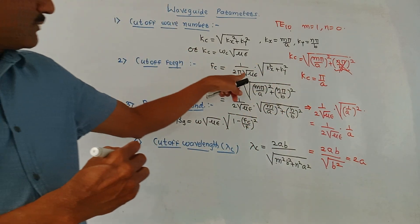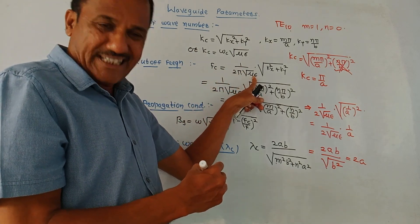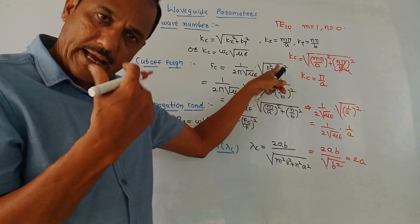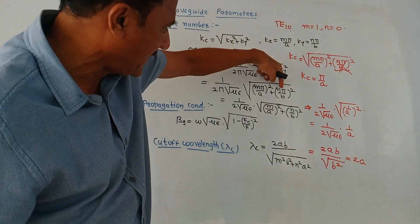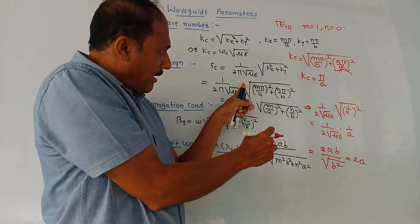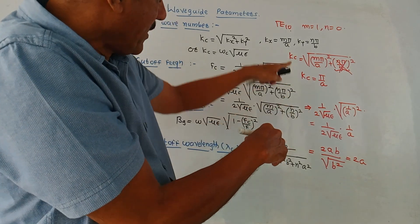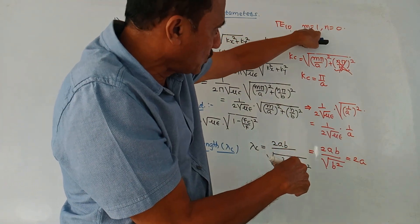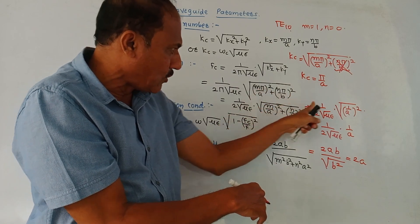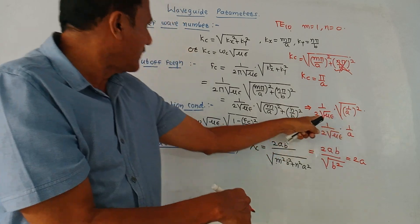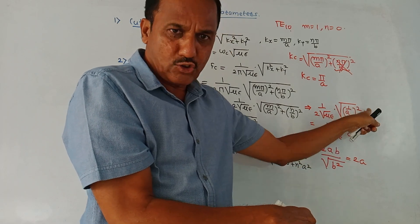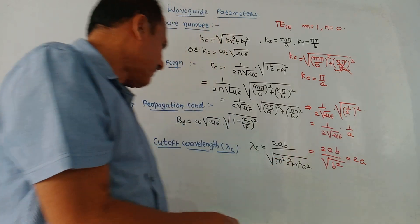Next is cut-off frequency. The basic formula is fc = (1 / 2π) * sqrt(Kx² + Ky²) / sqrt(mu * epsilon). For dominant mode, put M = 1 and N = 0 — the N term vanishes. You can further simplify by taking the π term common. The simplified formula for cut-off frequency of the dominant mode is fc = (1/2) * sqrt(1/A²) * (1/sqrt(mu*epsilon)), which reduces to fc = 1/(2A*sqrt(mu*epsilon)).